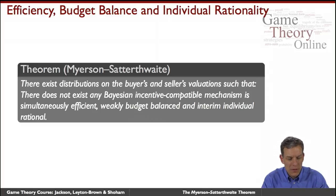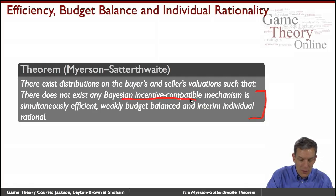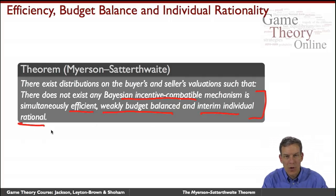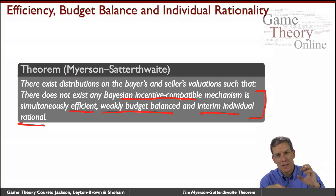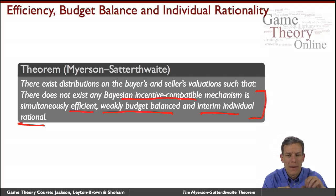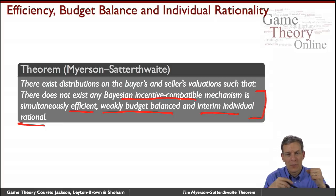What does the theorem say? There exist distributions on buyer and seller valuations such that there does not exist any mechanism which is Bayesian incentive compatible, efficient, weakly budget balanced, and interim individually rational. Weakly budget balanced means the amount the buyer pays is at least the amount the seller receives, so we're not injecting extra money. Interim individually rational means individuals don't want to walk away once told their value and what they expect to get.